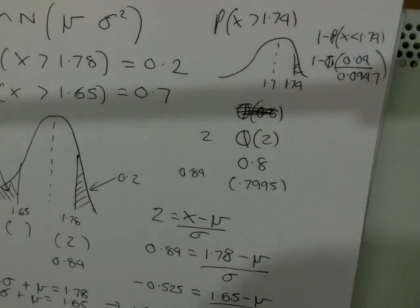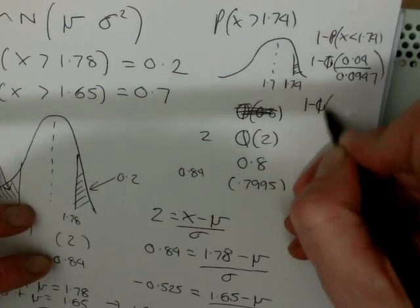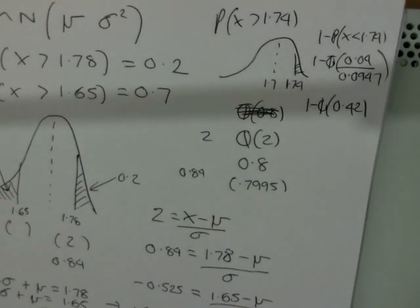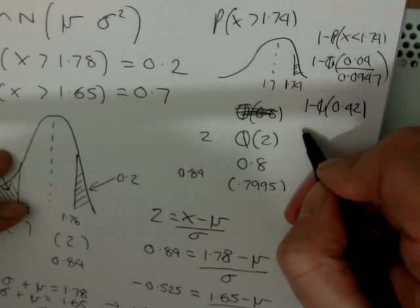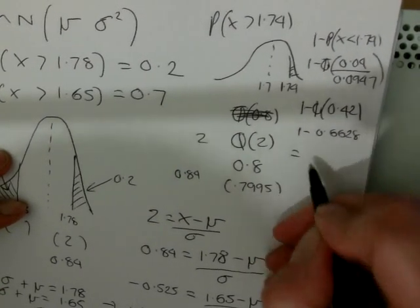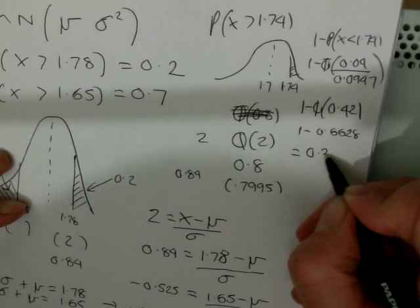Let's just quickly calculate that. We are looking at 0.04 divided by 0.0947. So, we're looking at 0.42. So, it's 1 minus probability of z equals 0.42. If we look up 0.42, we're going to find that comes to 0.6628. So, it's 1 minus 0.6628. So, that gives us the final answer, then, of 0.3372.